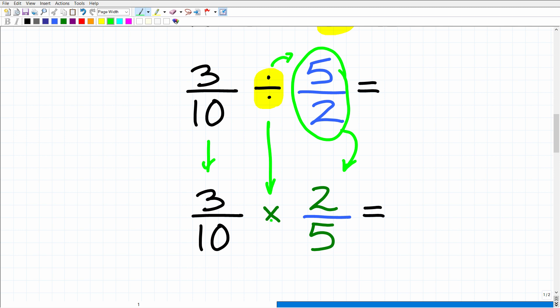That's called the reciprocal. When we do that, we can now change this into multiplication. Instead of 5 halves, we're going to have 2 fifths. Let's make sure we understand here. We just took this problem, 3 tenths divided by 5 halves, and we wrote it as 3 tenths times 2 fifths. When you're dealing with dividing fractions, you're always going to rewrite them into multiplication problems.